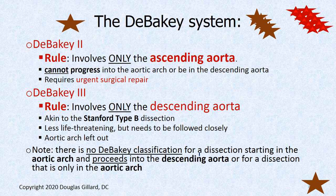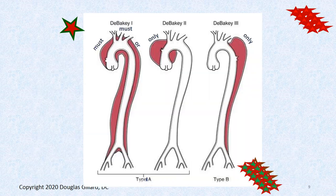Stanford A and DeBakey 1 both require quick surgical repair and intervention. DeBakey 2: the rule is it only involves the ascending aorta — if it involves the ascending aorta and the aortic arch, then it's a DeBakey 1; if it only involves the ascending aorta, then it is a DeBakey 2. DeBakey 3 only involves the descending part of the aorta — the thoracic aorta and/or the abdominal aorta. There is no description for an aortic arch dissecting aneurysm by itself under the DeBakey system — that's a hole in this system.